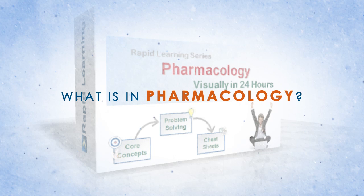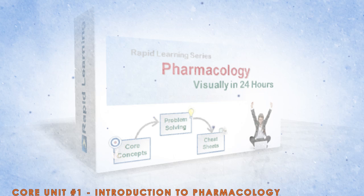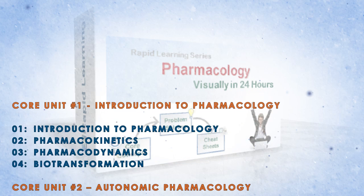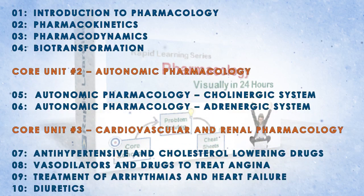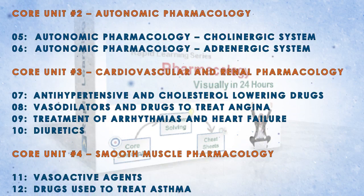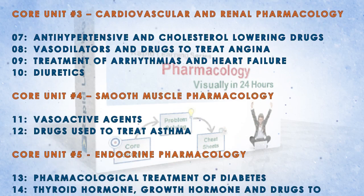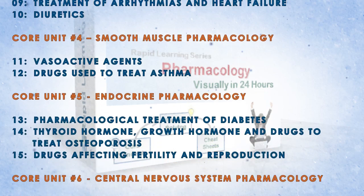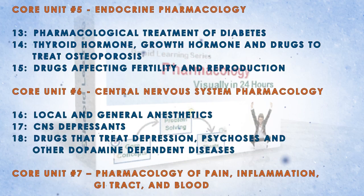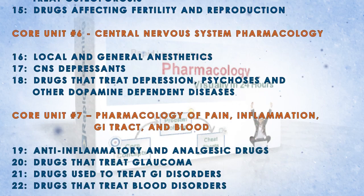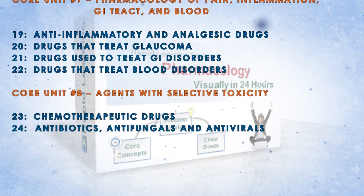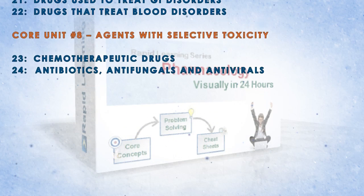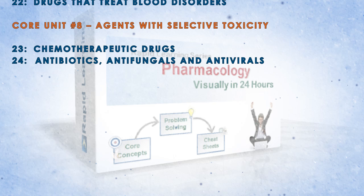Problem drills and cheat sheets. The topics include introduction to pharmacology, autonomic pharmacology, cardiovascular and renal pharmacology, smooth muscle pharmacology, endocrine pharmacology, central nervous system pharmacology, pharmacology of pain, inflammation, GI tract, and blood, and agents with selective toxicity. Learn pharmacology the smart way and get started with Rapid Learning today.